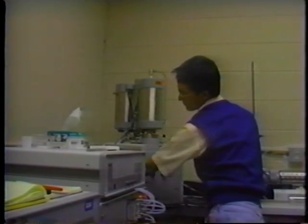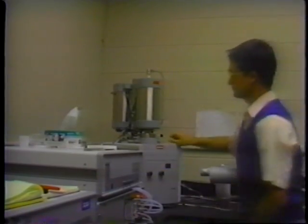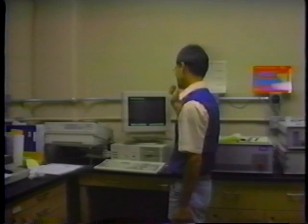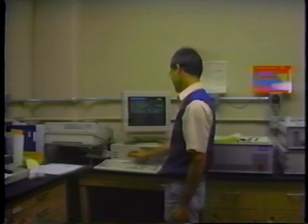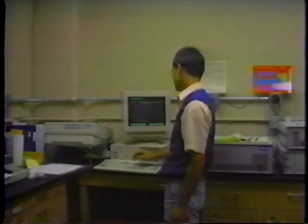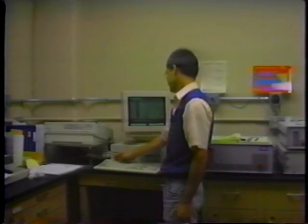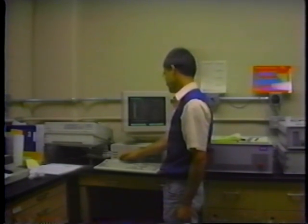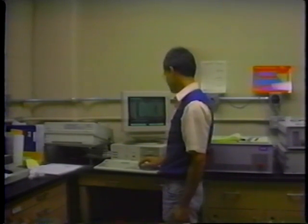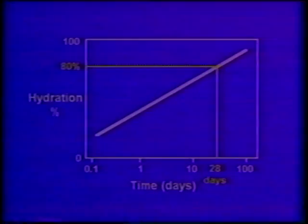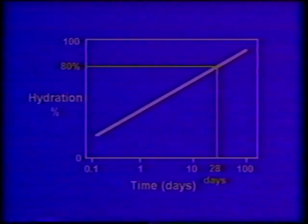At 105 degrees, the sample is dry but still retains its strength. The water involved in the hydration reactions is chemically combined with the cement and can be driven out of the sample by heating to 1000 degrees. At 1000 degrees, all of the original mixed water has been removed from the sample. The degree of hydration is calculated from the weight of chemically combined water. A typical cement paste, cured in moist conditions, will reach a degree of hydration of about 80% in 28 days.